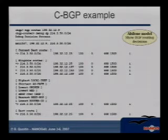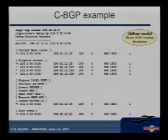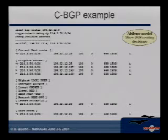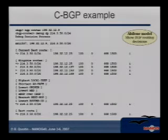This is just a sample of the output you could get from CBGP. It's based on a model of the Abilene network. The command shown here displays the different steps of the decision process on a single router towards a single destination prefix.